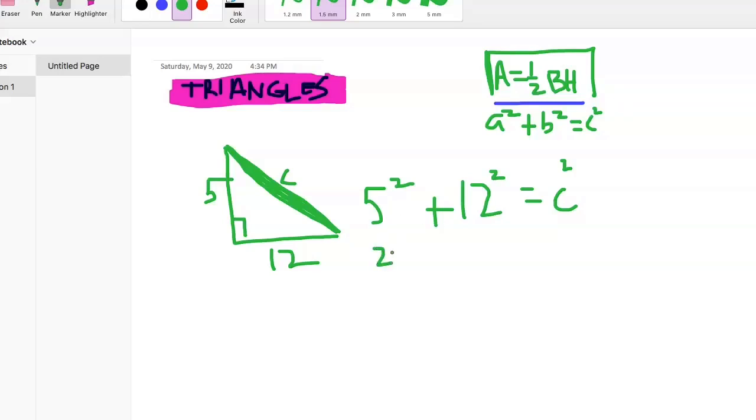We just have to plug these numbers in. We've got 5 squared - that's 5 times 5, that's 25. 12 times 12 is 144, equals - still we don't know - c squared. 144 plus 25, that is 169, equals c squared.